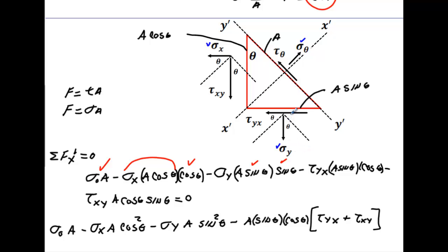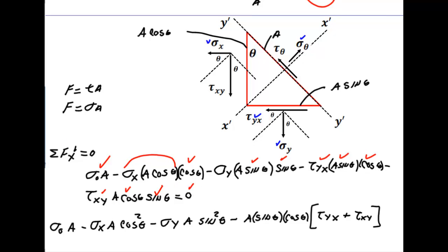For the shear stress terms: I take the shear stress across the face whose area is A times sine theta, which gives force τxy times A times sine theta, then multiply by cosine theta to project it along the x-prime axis. For the remaining shear term, I take the shear stress times A times cosine theta, then multiply by sine theta to orient it along the axis. Setting the sum of all forces equal to zero.